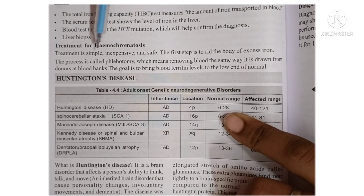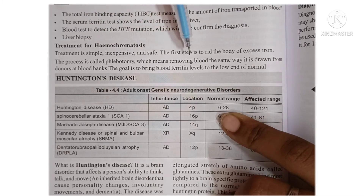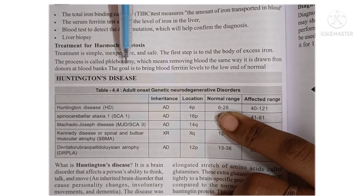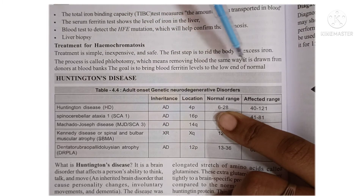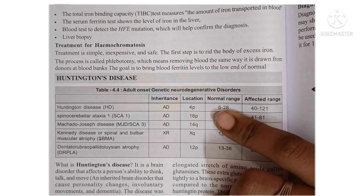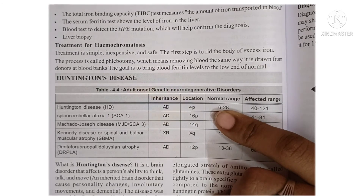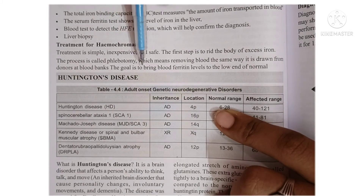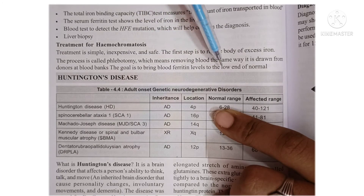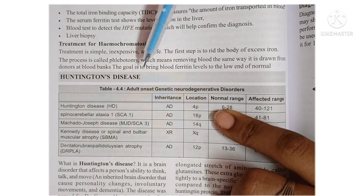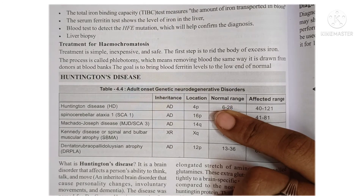Treatment for hemochromatosis is simple, inexpensive, and safe. The first step is to remove excess iron from the body through a process called phlebotomy, where blood is removed similarly to how it is drawn from donors at blood banks. The goal is to bring blood ferritin levels to the low end of normal. Since most iron is transported in the blood, removing excess blood reduces the excess iron in the body.